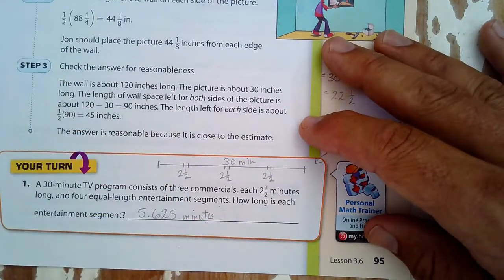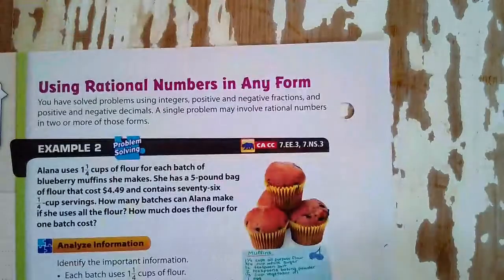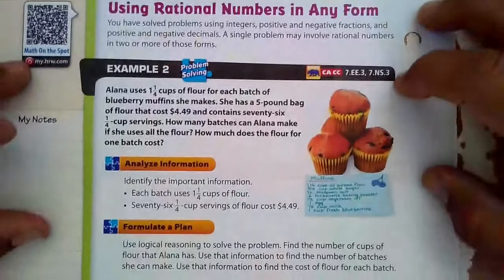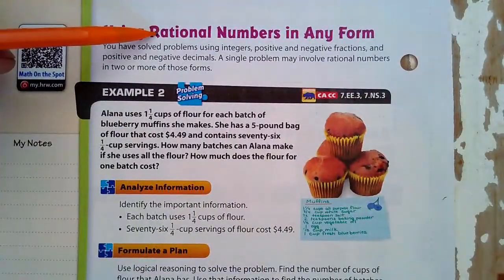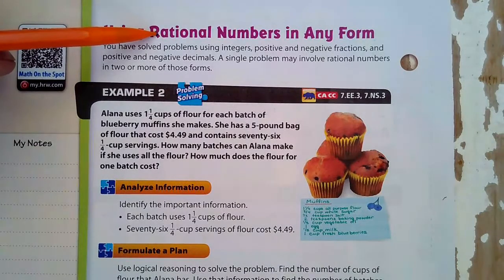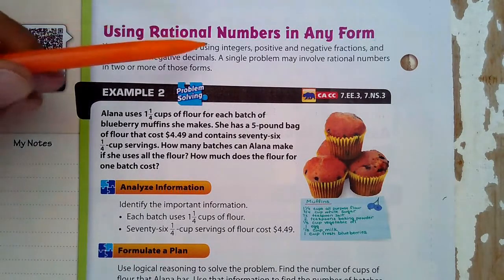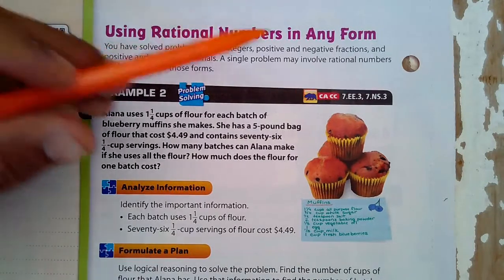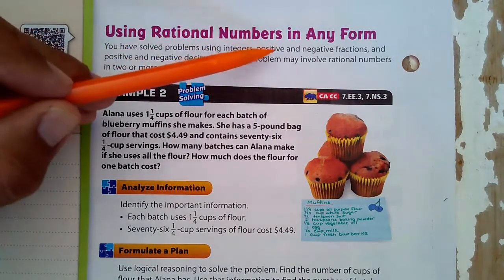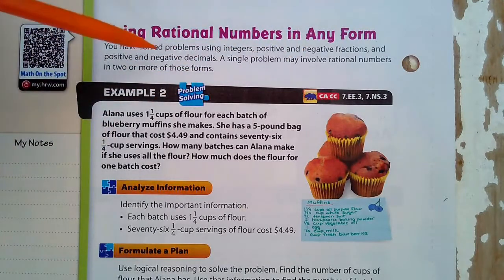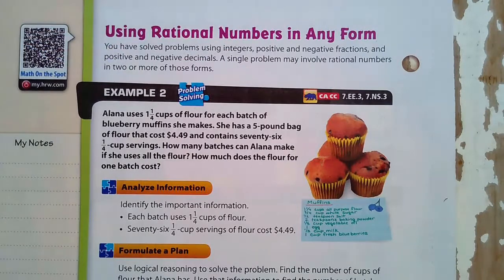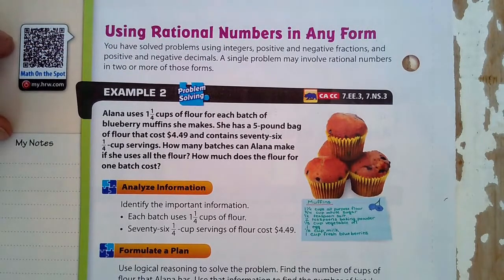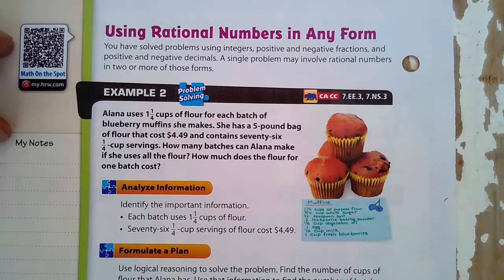Next, on to page 96. Using rational numbers - those rational numbers are any number that can be a fraction. You have solved problems using integers, so positive and negative numbers. Now we're going to be using positive and negative fractions and decimals. A single problem may involve rational numbers of two or more of those forms. So we're going to be using fractions and whole numbers and decimals all in the same problem.